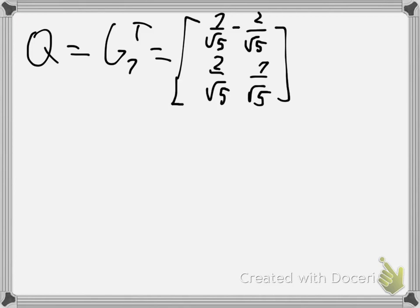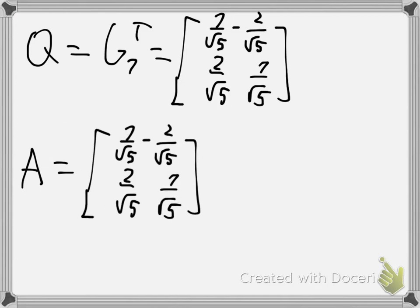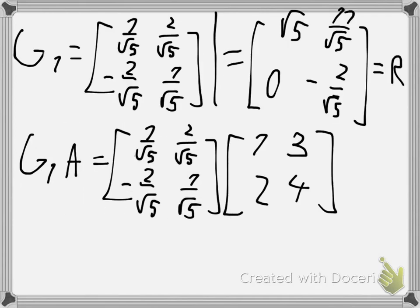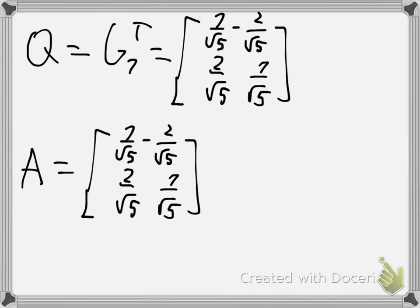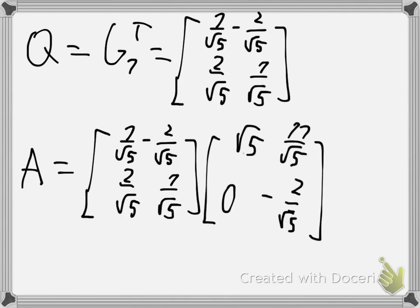And so the QR factorization would be that times this upper triangle matrix. So that would be your QR factorization.